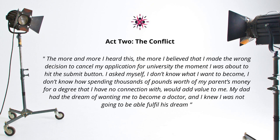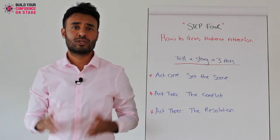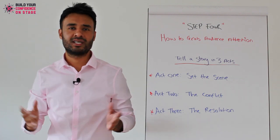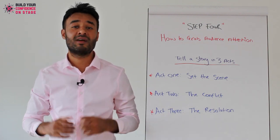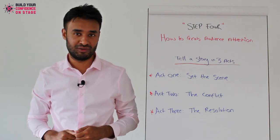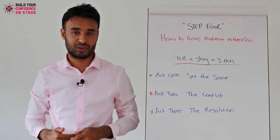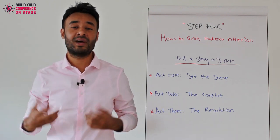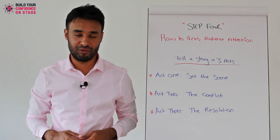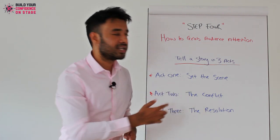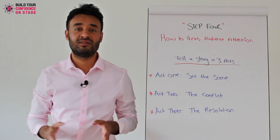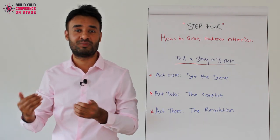I asked myself: I don't know what I want to become. I don't know how spending thousands of pounds of my parents' money for a degree that I have no connection with would add value to me. My dad had the dream of wanting me to become a doctor and I knew I was not going to be able to fulfill his dream. So what is the conflict? Sarah is a great achiever going to get a first in her degree, but my parents think I'm a failure because I chose not to go to university. I now believed myself that I am a failure — both from a parent's perspective and also a mental and psychological perspective for me.